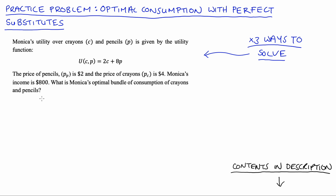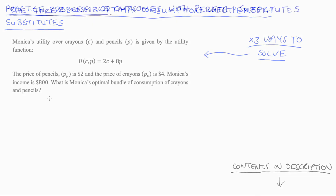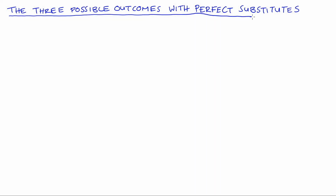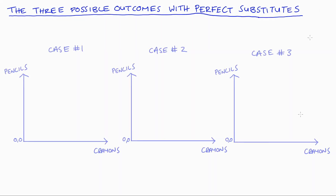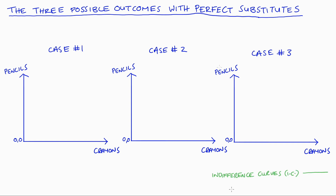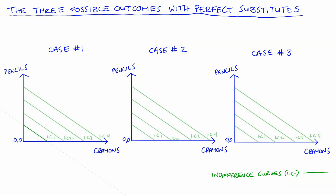When we have perfect substitutes, there are only really three possible ways that things could go. So I'm going to draw three diagrams to illustrate. I've put crayons on the horizontal axes and pencils on the vertical axes. Our indifference curves, when we have perfect substitutes — I'll just label them IC — they're going to be linear, so straight lines, maybe something like this. I'll fill in four indifference curves per diagram, labelled one to four.